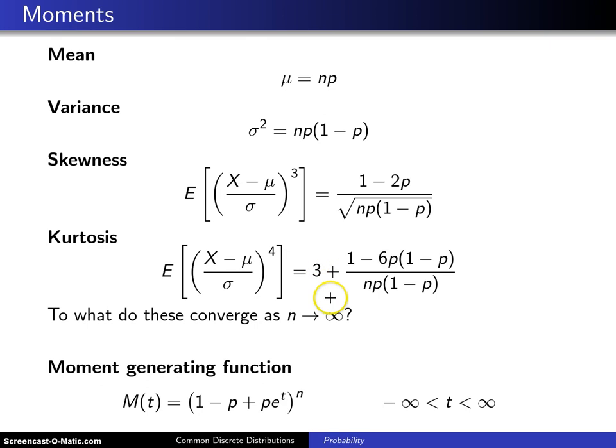And the kurtosis turns out to be this expression. Now one question is what do these converge to as n goes to infinity? Well, you can see the mean and the variance are both marching off to infinity, but it turns out that the skewness...